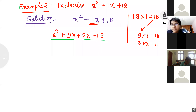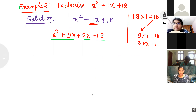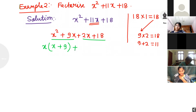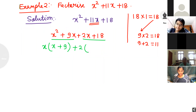In the first group, x is the common variable — I will take x common. x squared plus 9x gives x times (x plus 9). For the second group, 2 is common — taking 2 common from 2x plus 18 gives 2 times (x plus 9). Both brackets are the same, so our answer is right. The answer is (x plus 9)(x plus 2).